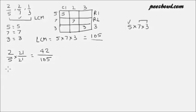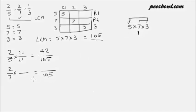Let us see 2 upon 7. In this case also, we need to make the denominator 105. We already have 7, so what is left is 5 multiplied by 3, that is 15. So 15 we need to multiply with both the numerator and denominator. 15 multiplied by 2 is 30, and at the denominator we already have 105.